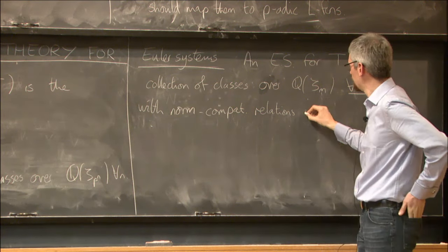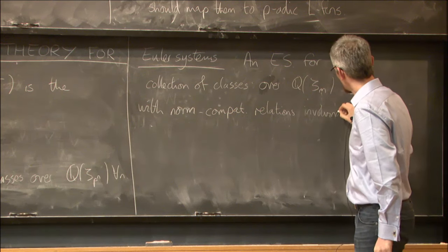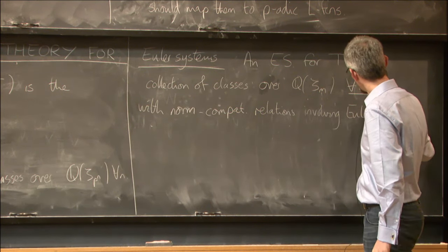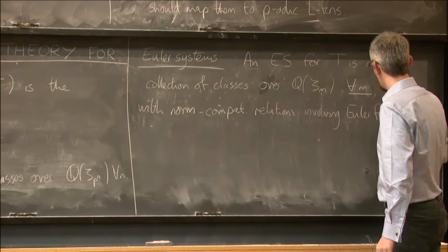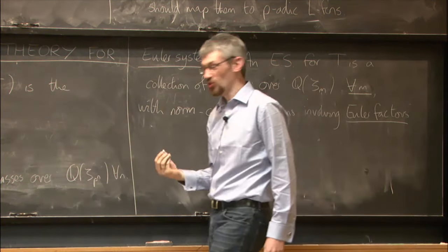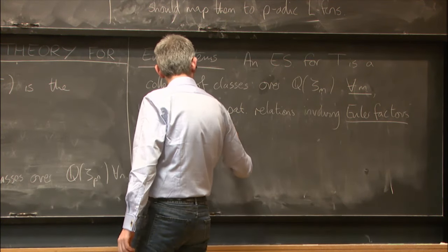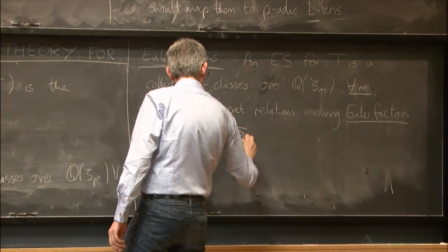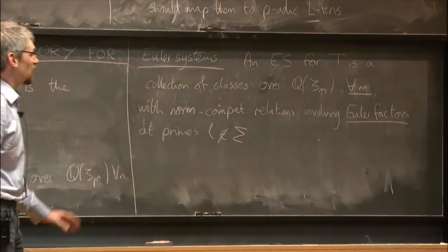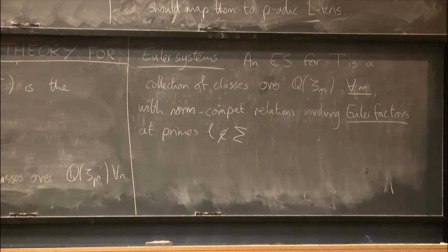So Euler systems. You can put in auxiliary primes away from p as well. And there should be norm compatibility relations which are much more elaborate than having just exact norm compatibility. These involve Euler factors, but only at the primes not in sigma. So in particular, if you have such a system. Yes, this is all for abelian extensions of Q. And Q sigma, you have to start with Q sigma. Yes, I'm fixing a sigma outside which T is unramified, which will remain fixed for pretty much the whole talk.